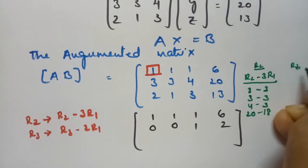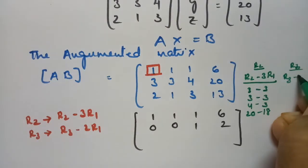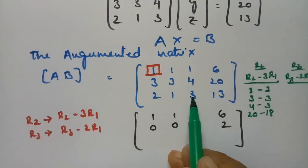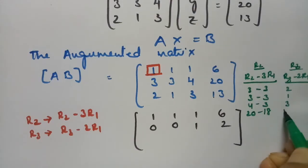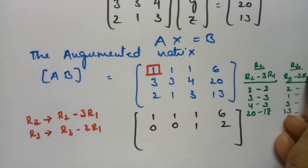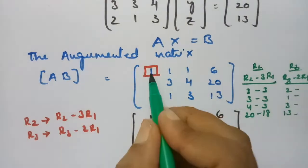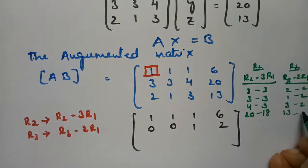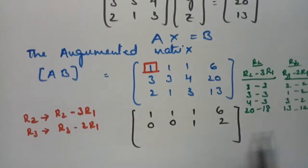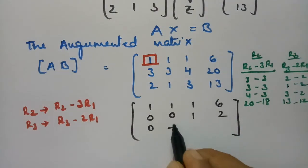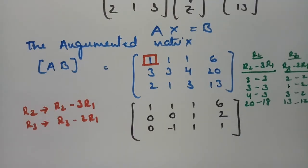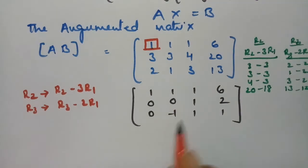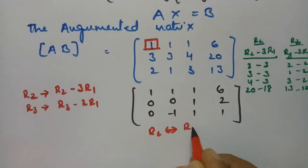For R3, the operation is R3 = R3 - 2R1. Row 3 is 2, 1, 3, 13 minus 2 times row 1 which is 2, 2, 2, 12. This gives 2-2=0, 1-2=-1, 3-2=1, and 13-12=1.